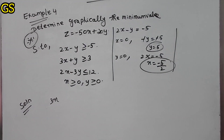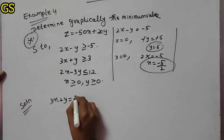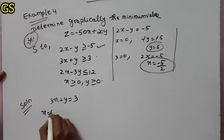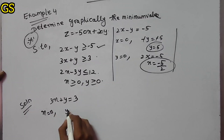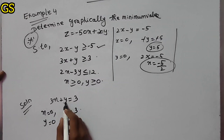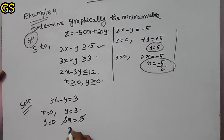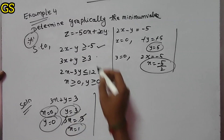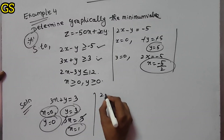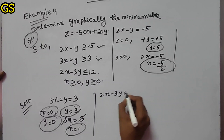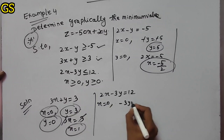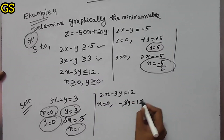The second constraint is 3x plus y equals 3. When x is 0, y equals 3. When y is 0, 3x equals 3, so x equals 1. Then for the third constraint, when y equals minus 4 and y is 0, 2x equals 12, so x equals 6.